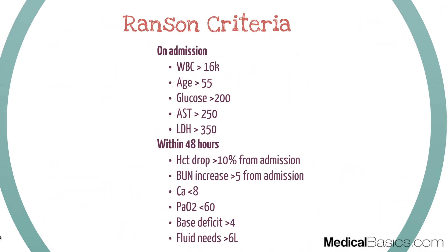For education, we'll look at the Ranson criteria, which is broken into two components: data collected on admission, and changes observed within 48 hours. What the Ranson criteria — and prognostic scores in general — tell you is twofold: the likelihood of actually having the disease, and more importantly, the likelihood of a major adverse event or mortality.